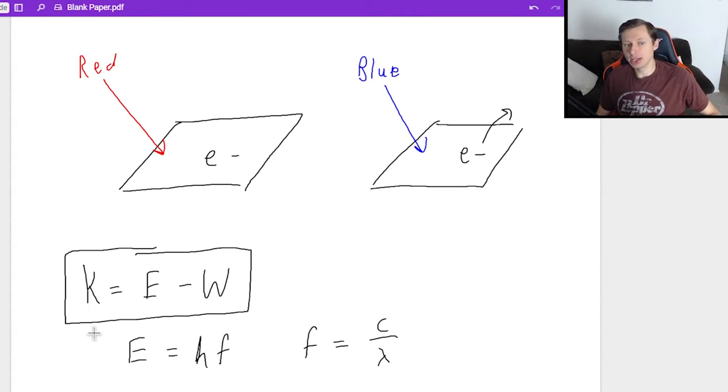If it does eject an electron, we have this very nice equation: k equals e minus w, where k is the kinetic energy, which we all know and love from physics 1, e is the energy of the photon, which can be found using this equation, energy equals h times f, where h is Planck's constant, which is 6.63 times 10 to the minus 34th, and f is the frequency of the light.